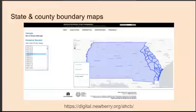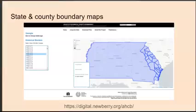State and county boundary maps show you how boundaries changed over time. On this slide, you can see what Georgia's county boundaries were like as of February 8, 1796. This atlas of historical and county boundaries is linked on our library's genealogy webpage, but the direct web address is on this slide as well. It's an interactive atlas — as you click on each date in the box to the left of the map, the map boundaries will change before your eyes.